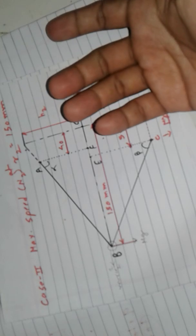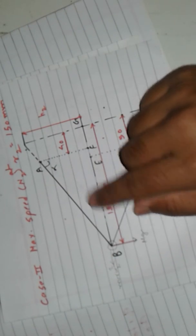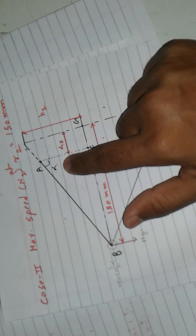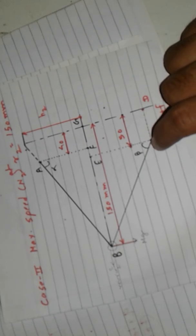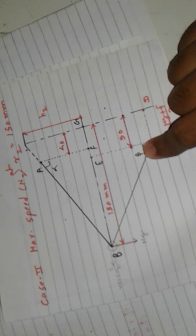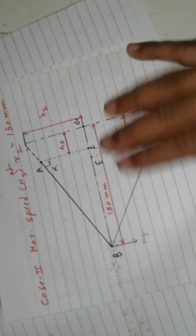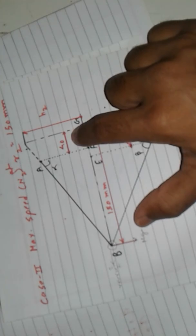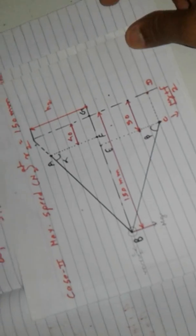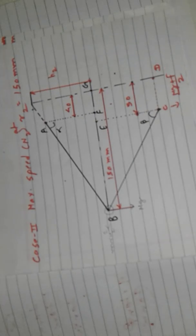For Case 2, the radius of rotation is 150 mm. The same procedure applies: find h1 using the sine function in the triangle, then find tan alpha and tan beta to get q. The only change is using 150 − 40 instead of 125 − 40. I hope you liked this video — please like, share, and subscribe. Thank you.